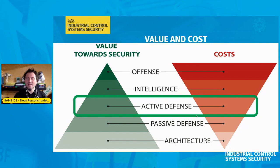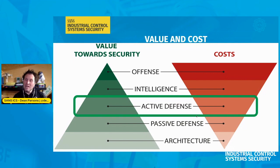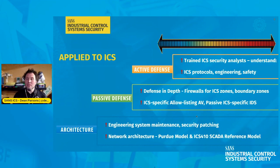Active defense in the middle is that sweet spot — it does cost money, absolutely, but you get a lot of benefit from it, and that's really where we're suggesting organizations be today. As you go higher up the value-toward-security axis, each level becomes more and more costly to achieve the protection you may or may not want at your maturity level in the sliding scale.